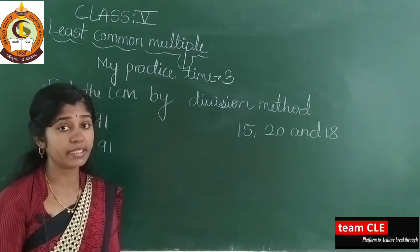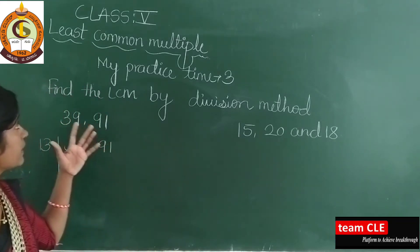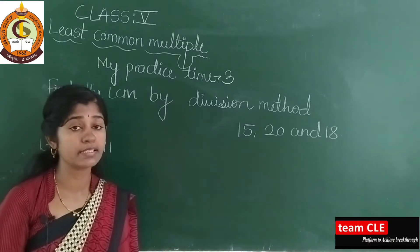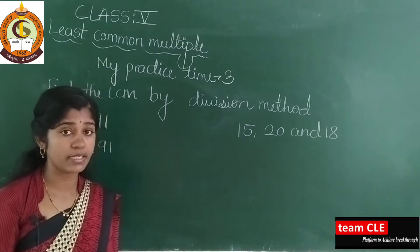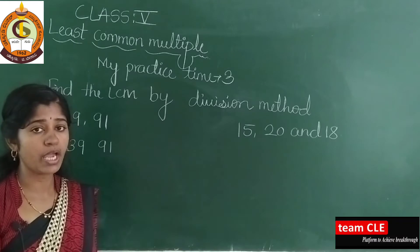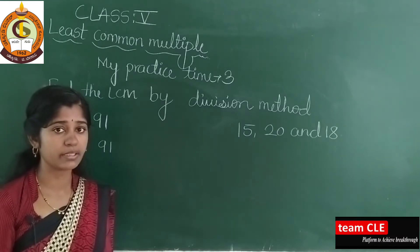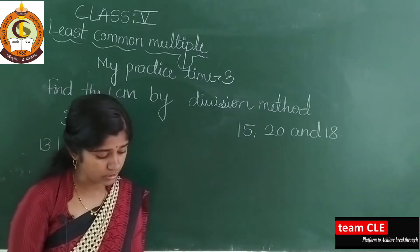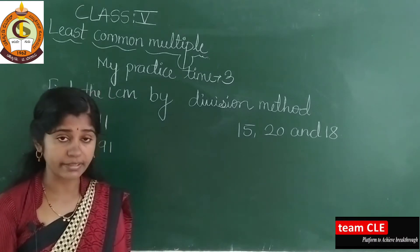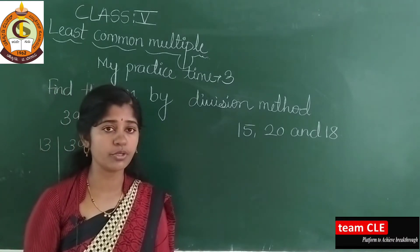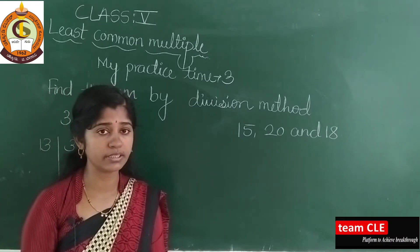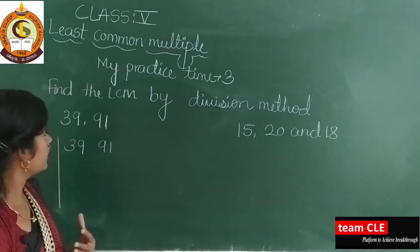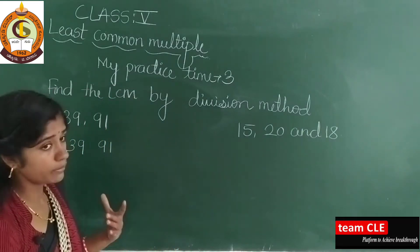To find the LCM — the least common multiple, in short form we call it LCM. To find the LCM we have three methods: one is the multiple method, division method, and also the prime factorization method. In previous videos we learnt the multiple method, and in today's class we are going to discuss the division method.